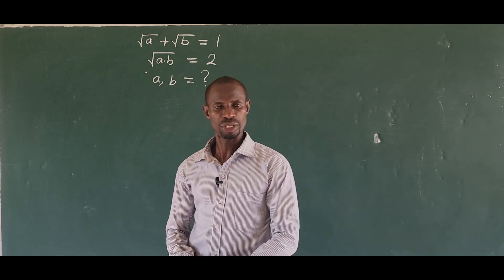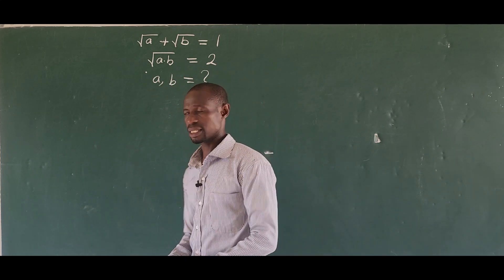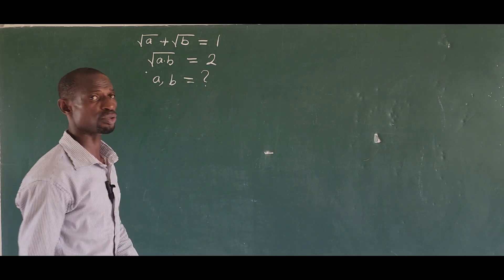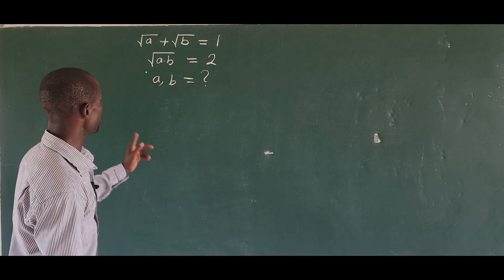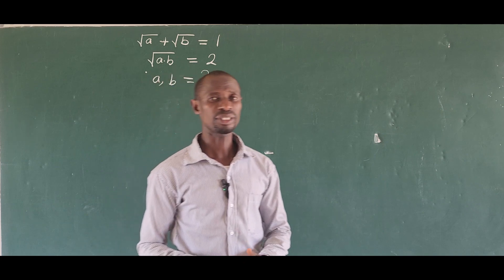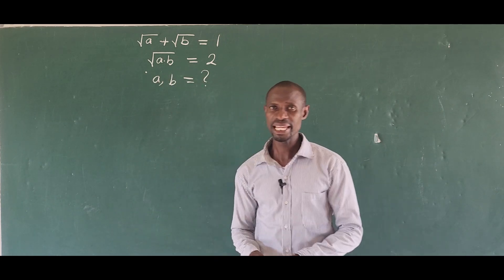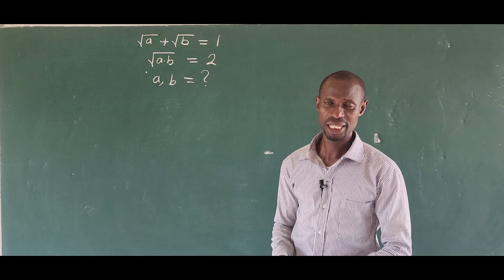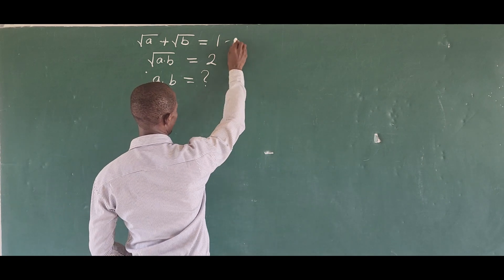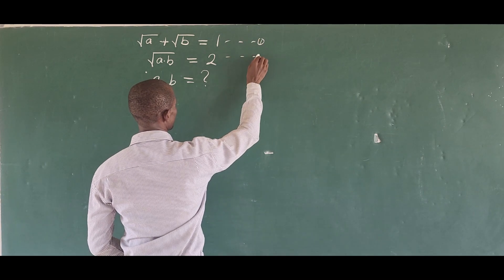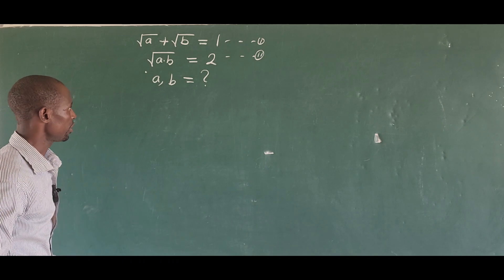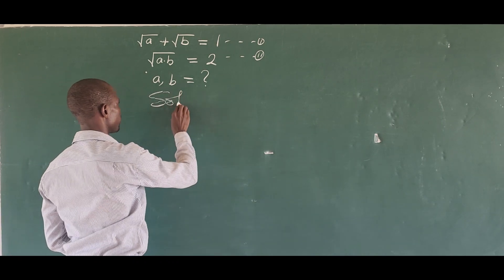Hi, welcome everyone to today's math class. We have this radical set of equations before us. The first one is root(a) plus root(b) equal to one, and the second equation is root(a times b) equal to two. What is the value of (a, b) that satisfies these simultaneous equations? Let's take our solution straightforward.